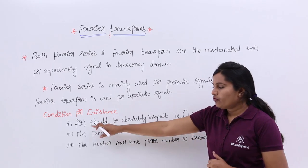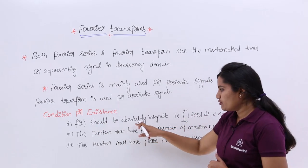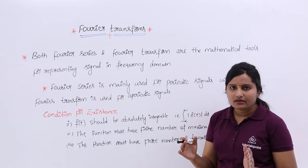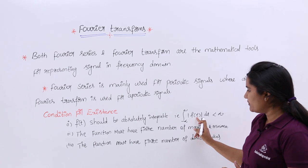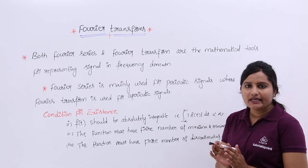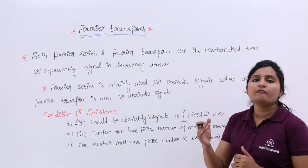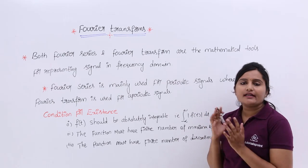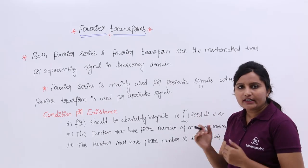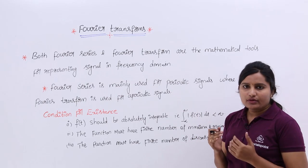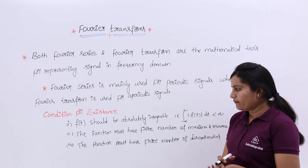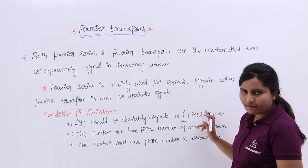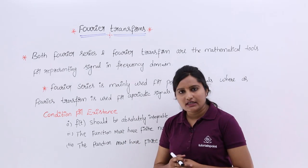The first condition is: if you want to transform f(t), that f(t) should be absolutely integrable. That means, the integral from minus infinity to infinity of the modulus of f(t) dt must be less than infinity — you need to get a finite value, not infinity. If you get infinity, then you cannot represent the Fourier transform for that signal f(t). This is the first important Dirichlet condition for the existence of Fourier transform.